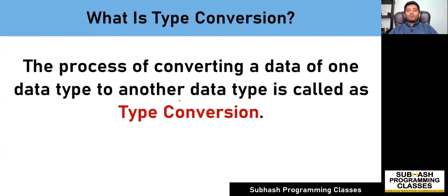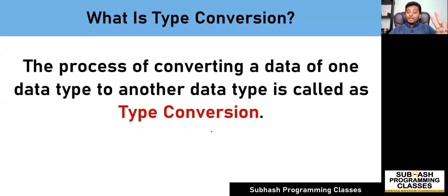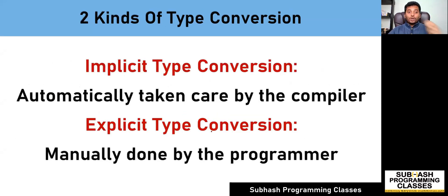So what is type conversion? The process of converting a data of one data type to another data type is called as type conversion. And in C language, there are two kinds of type conversions: one is called as implicit type conversion, and the other one is called as explicit type conversion.